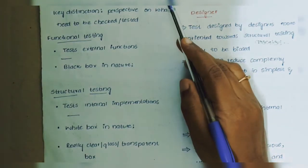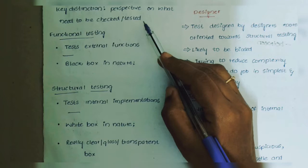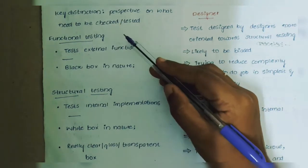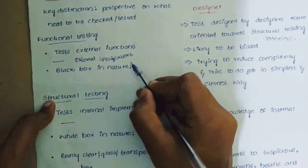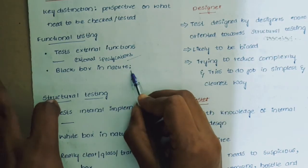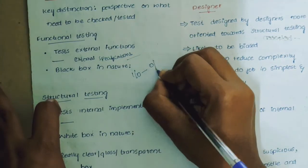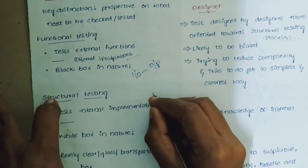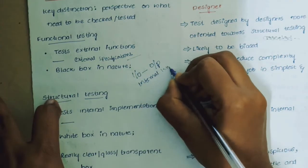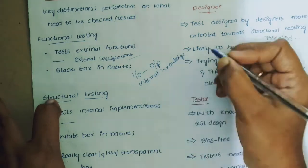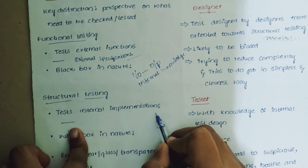Coming to functional versus structural testing. The key distinction is on what needs to be checked and tested. Functional testing tests external factors as described by external specifications. It is black box in nature, which maps input to output, and there is no need for internal knowledge.